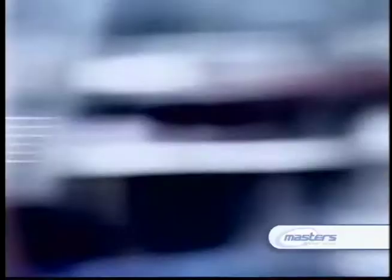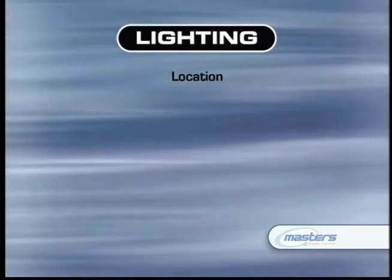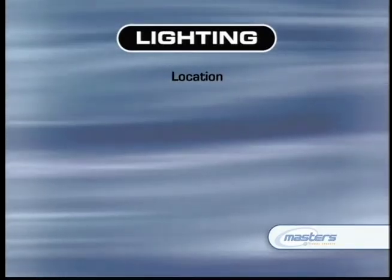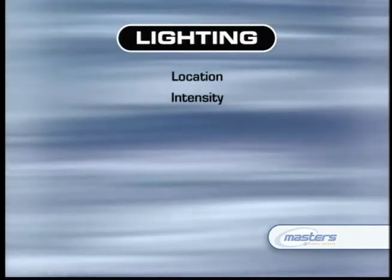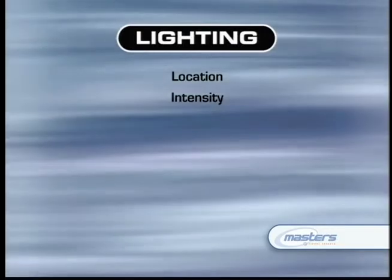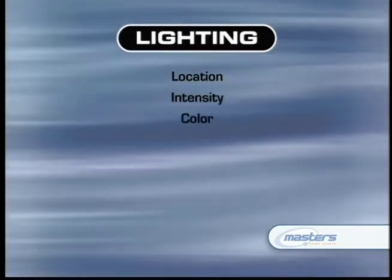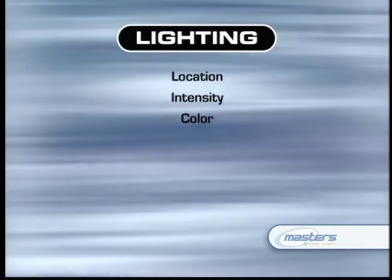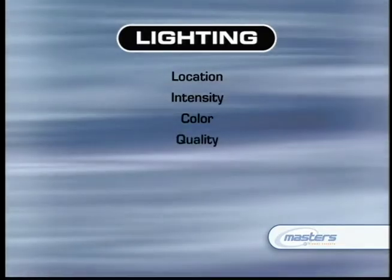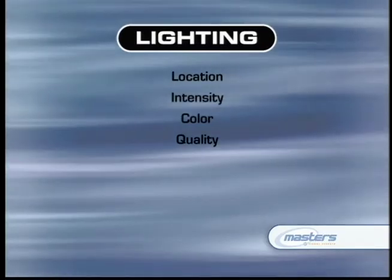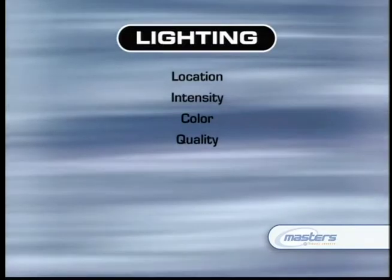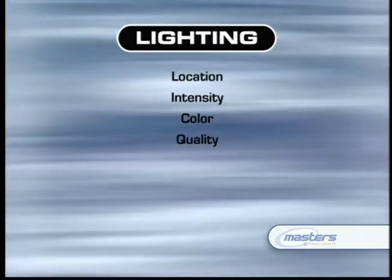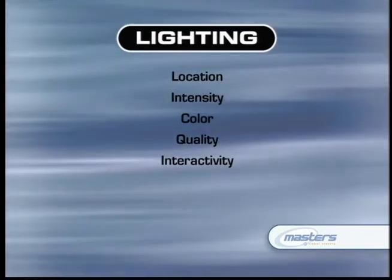There are four primary things we want to notice about the lights in a scene. The first is their location — where are they coming from? Next is intensity — how bright they are relative to each other. Then, the color of the lights — if you've got different light sources with different color characteristics, note those and try to duplicate them. And the quality of the lights — whether they're a hard, direct light source or a softer, more ambient type. Finally, interactive lighting — how the light affects other objects in the scene.